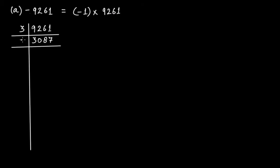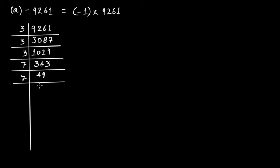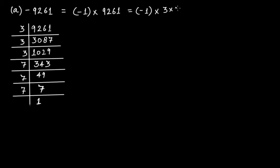Continuing the division: again checking divisibility by 3, we get further factors. Then this number is not divisible by 3 because the digit sum gives 10, so we try 7. 7 goes into 343 giving 49, then 7 goes into 49 giving 7, and finally 7. So minus 9261 can be written as 3 multiplied by 3 multiplied by 3, multiplied by 7 multiplied by 7 multiplied by 7.